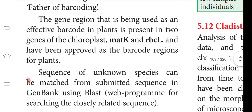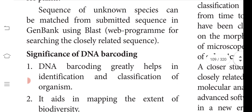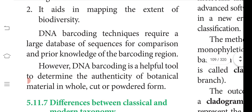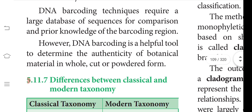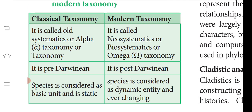Since plants definitely have chloroplasts, those genes are used for making the barcode. The significance of DNA barcoding is that it greatly helps in identification and classification of organisms and in mapping. However, DNA barcoding requires a large database because every DNA segment must be coded.